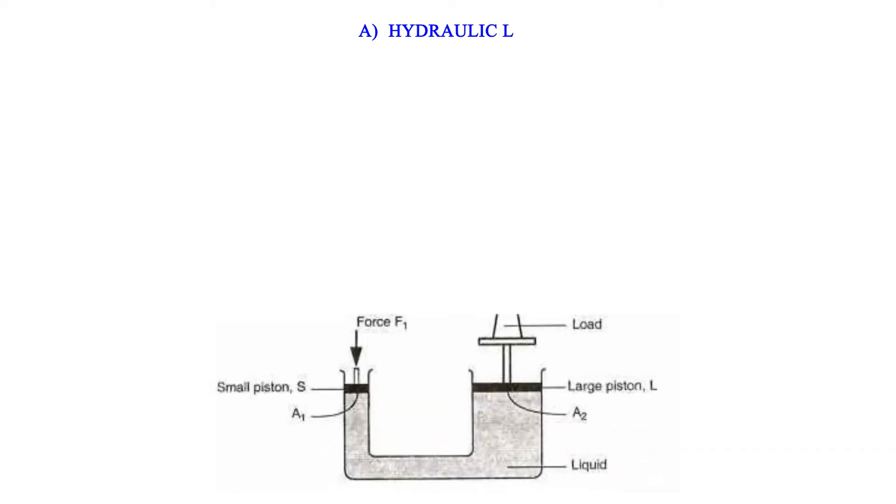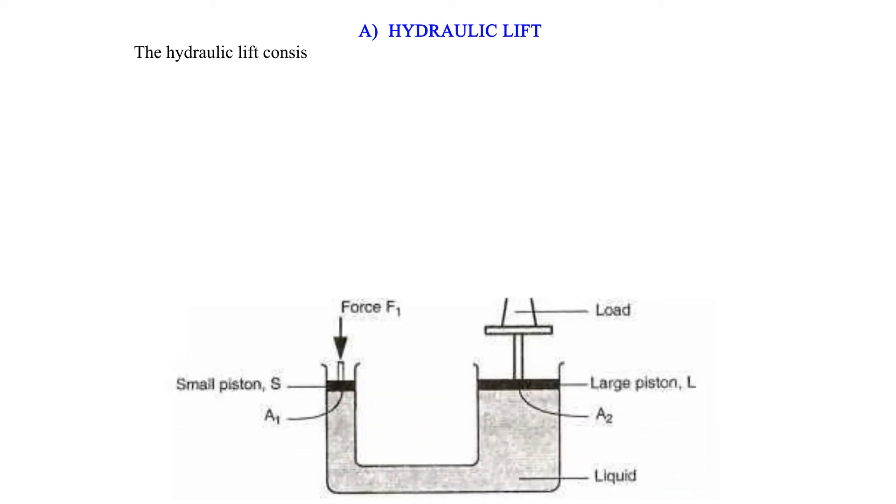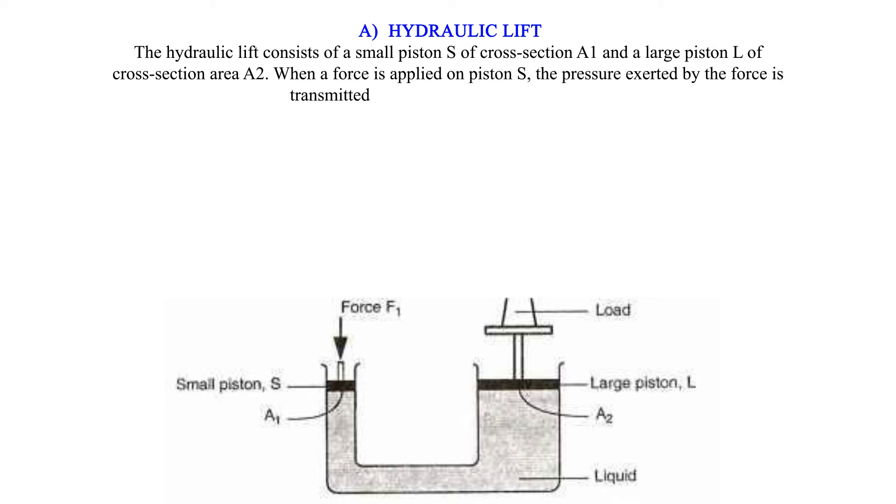A. Hydraulic Lift: The hydraulic lift consists of a small piston S of cross-section A1 and a large piston L of cross-section area A2. When a force is applied on piston S, the pressure exerted by the force is transmitted throughout the liquid to piston L.